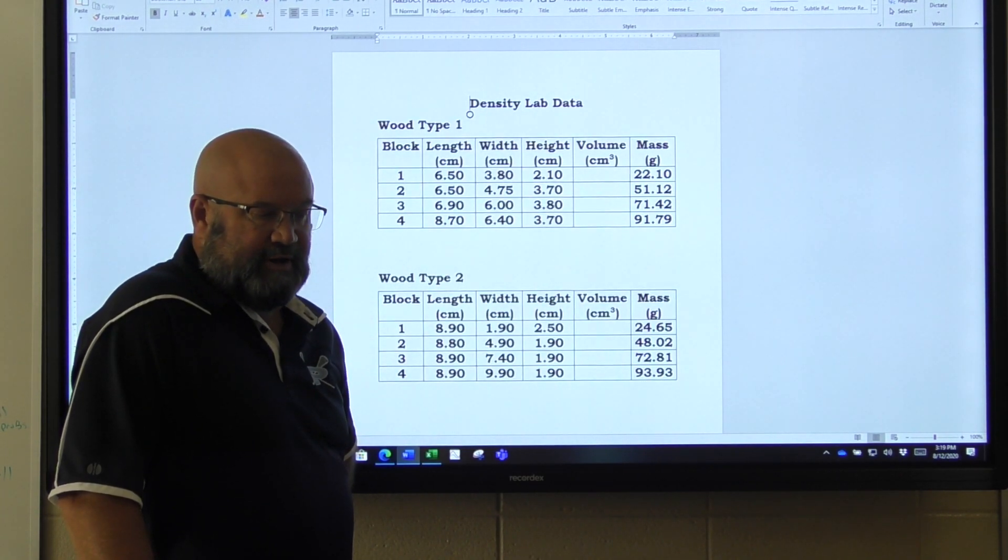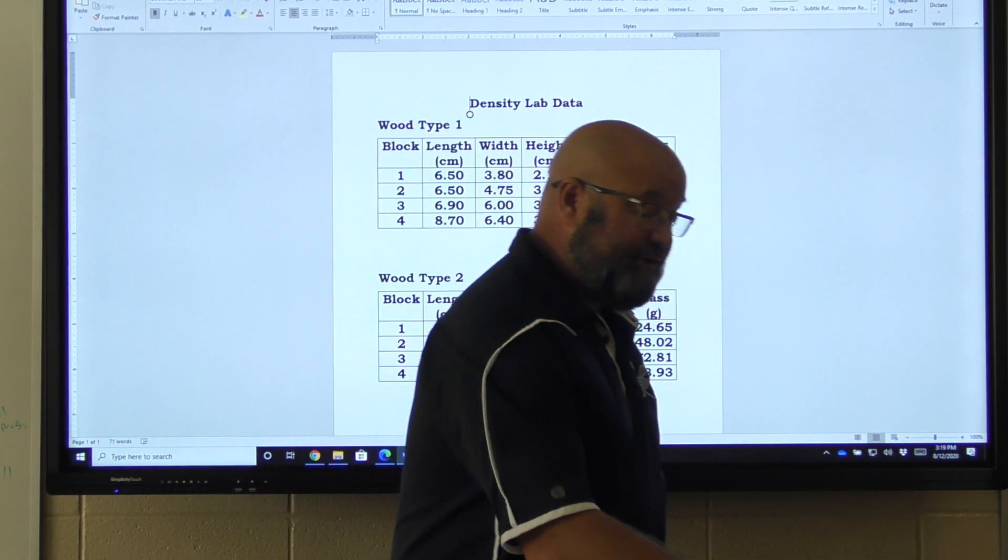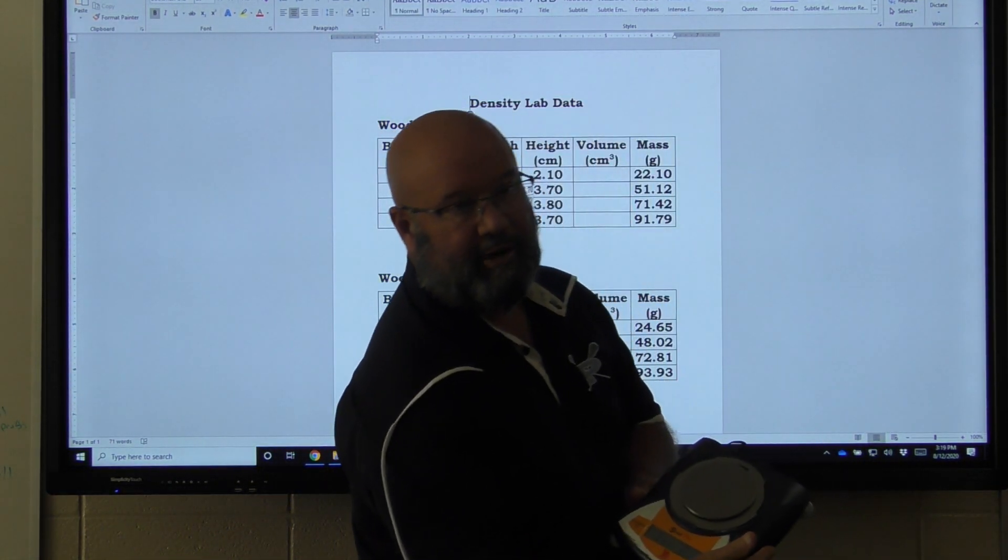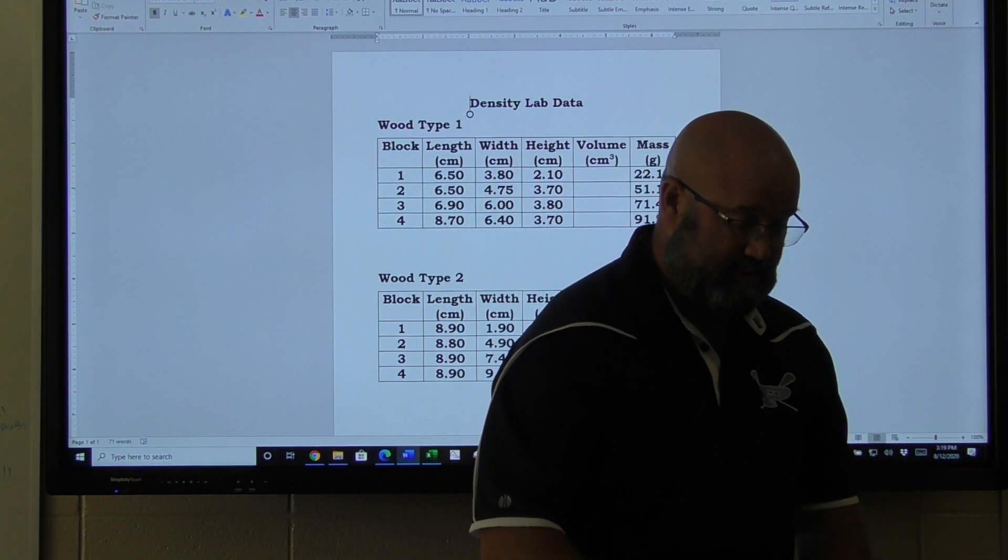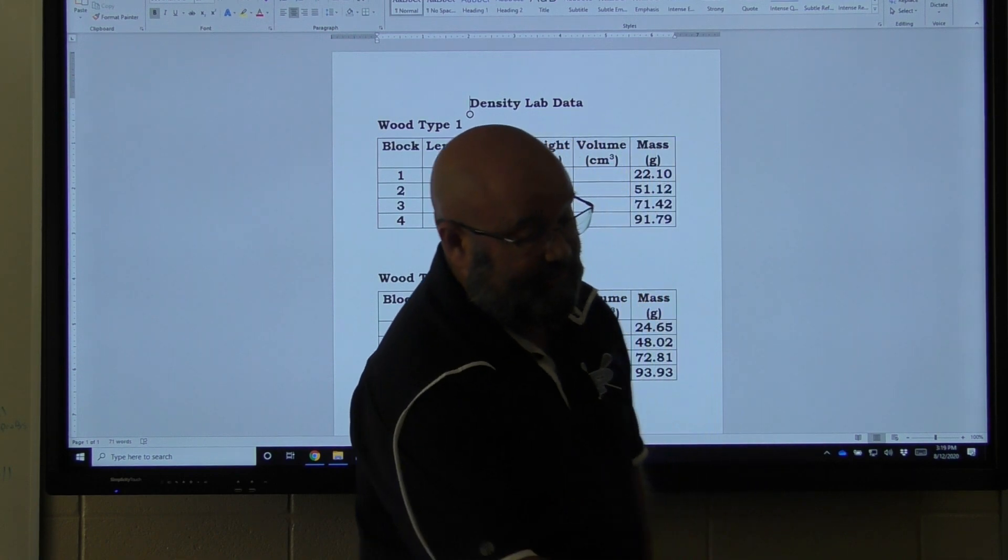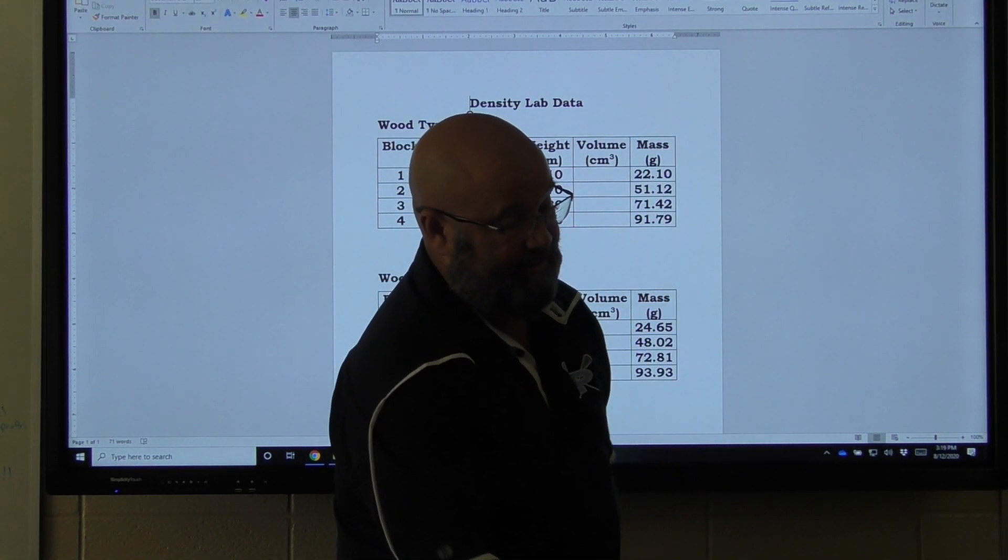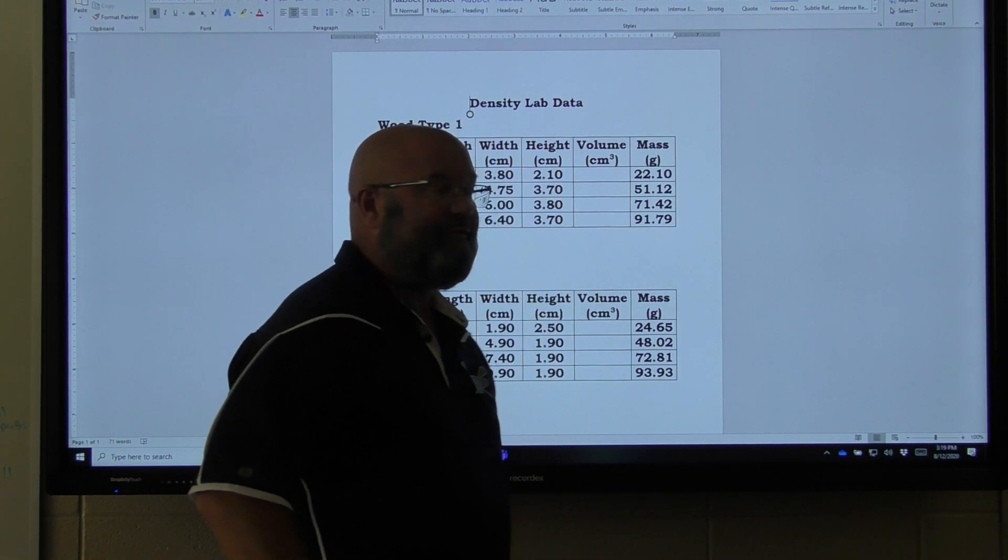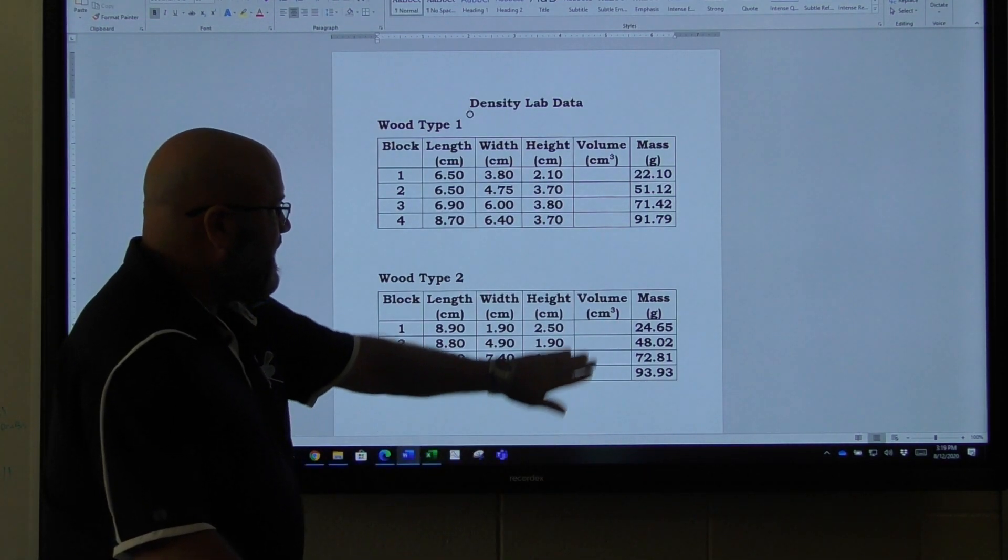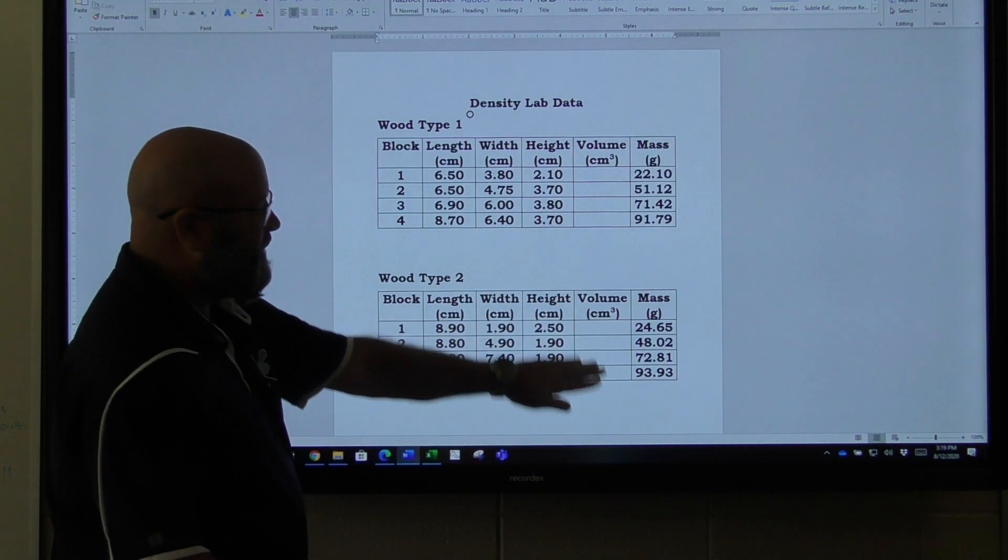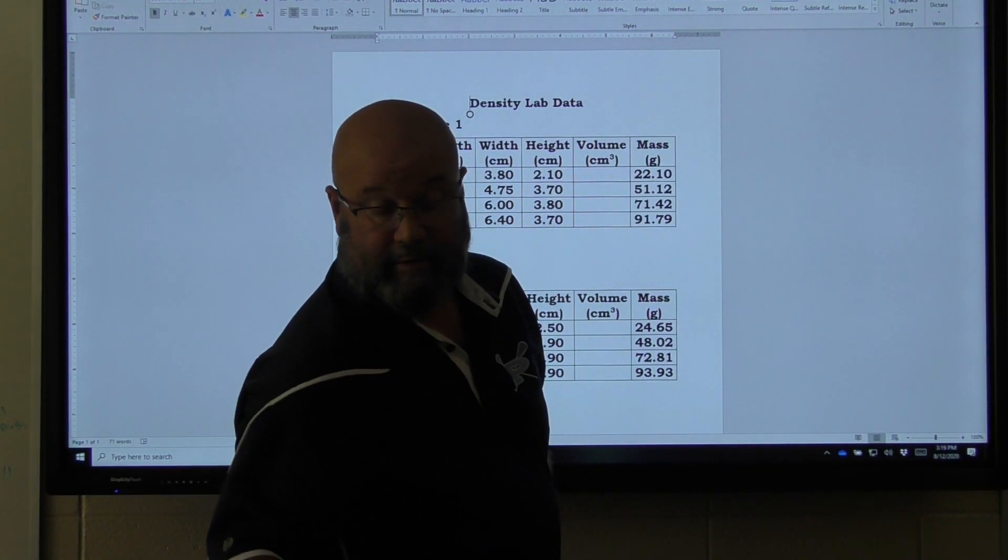Just an introduction to labs. Also, when I take the mass of each one, I just use an electronic balance. You've probably all seen them before. I might just set it down, hit the zero, and just put the mass on there. Once it clears, I put it on there and record the value. I've recorded the value for each one of those different blocks of the wood from type one as well as the wood from type two with those length, width, and height measurements that are here.